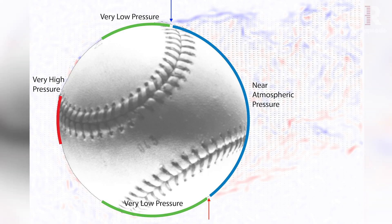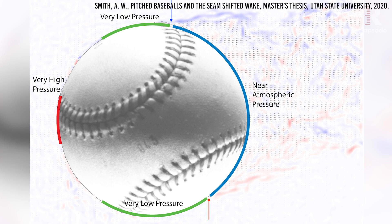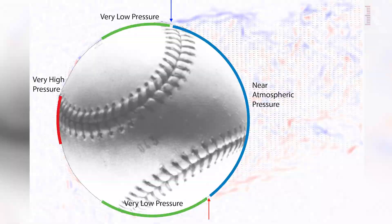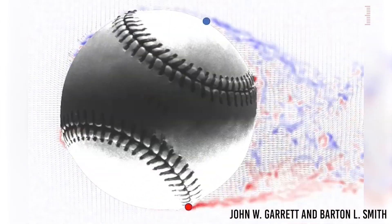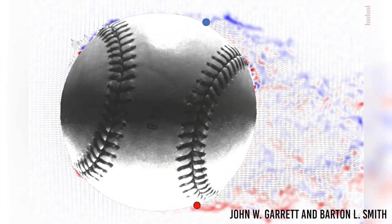This is due to the seam shifted wake effect, based on research conducted at Utah State University. The high-level understanding is that the position of seams on the baseball relative to the direction of travel causes imbalanced pressure distribution on the ball, creating a force that moves it in a different direction than it otherwise would. So we need to pay attention to how the seams are oriented as the ball flies through the air.